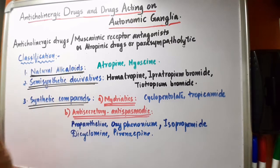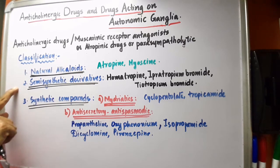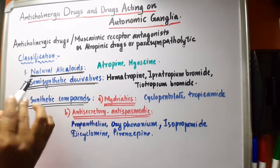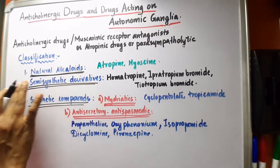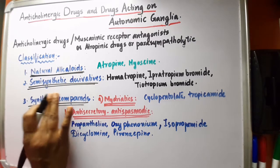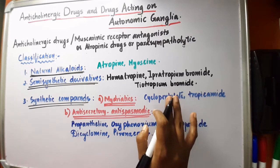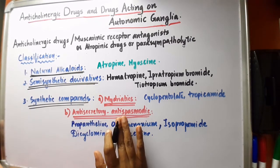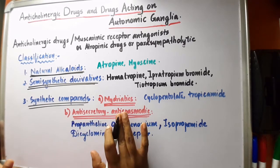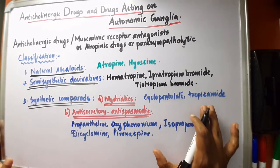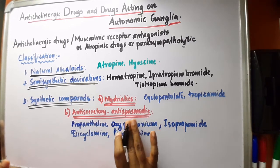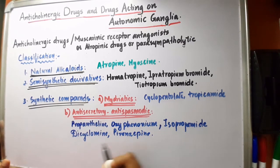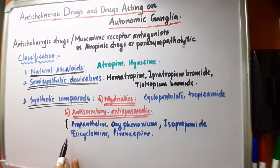The classification of anticholinergic or atropinic drugs includes natural alkaloids, semi-synthetic derivatives, and synthetic compounds. Natural alkaloids include atropine and hyoscine. Semi-synthetic derivatives include homatropine, ipratropium bromide, and tiotropium bromide. Synthetic compounds used as mydriatics are cyclopentolate and tropicamide. Those used as anti-secretory and antispasmodic agents include propantheline, oxyphenonium, isopropamide, dicyclomine, and pirenzepine. The first three are quaternary compounds, while dicyclomine and pirenzepine are tertiary amines.